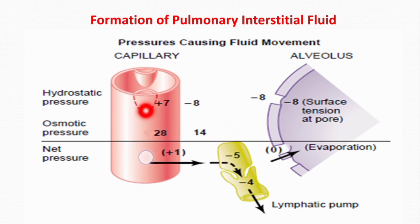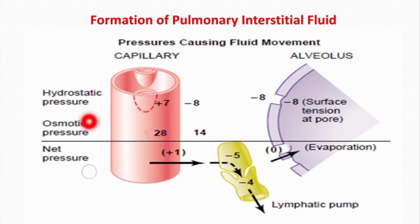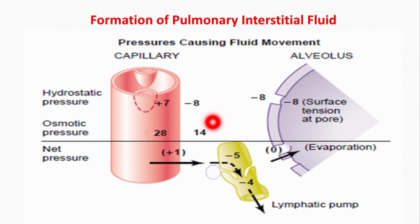Two Starling forces are inside the capillary and two are in the interstitium. The forces inside the capillary are: pulmonary capillary hydrostatic pressure, which is 7 mmHg, and plasma colloid osmotic pressure, which is 28 mmHg. The two forces in the interstitium are: interstitial fluid colloid osmotic pressure, which is 14 mmHg, and interstitial fluid hydrostatic pressure, which is minus 8 mmHg — the minus sign indicating suction.